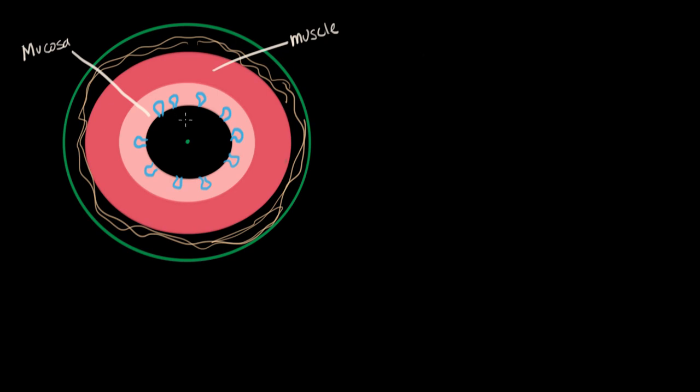And here we have the lumen. This is where the air actually moves in and out. It is dry but nice and lubricated by the mucus. So this is a quick look at what the normal cross section of the airway looks like.